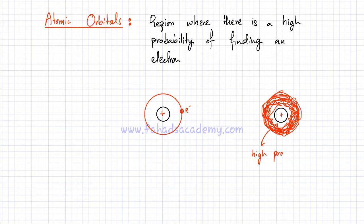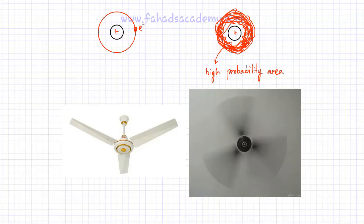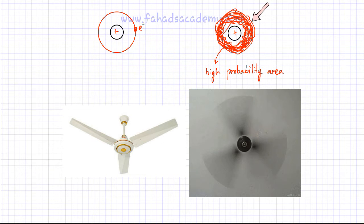I've drawn the path the electron is taking, but I don't exactly know where in that area the electron is at a particular instant. So this region would be considered a high probability area. The image of an electron just sitting around a nucleus is incorrect — the electron is moving very fast and we can only define an area around the nucleus where there's a very high probability of finding it.